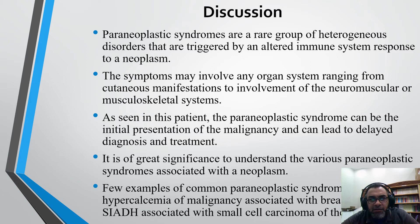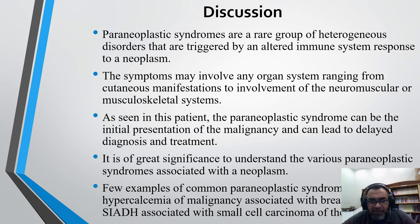Discussion of this unfortunately difficult case: paraneoplastic syndromes are a rare group of heterogeneous disorders triggered by an altered immune system response to a neoplasm. The symptoms may involve any organ system, ranging from cutaneous manifestations to involvement of the neuromuscular or musculoskeletal systems. As seen in this patient, the paraneoplastic syndrome can be the initial presentation of the malignancy and can lead to delayed diagnosis and treatment.